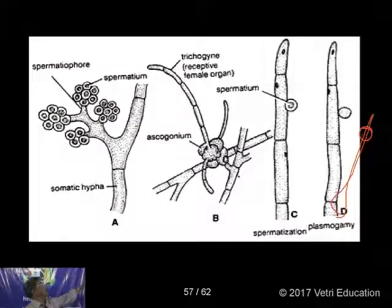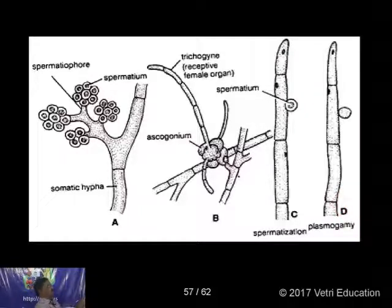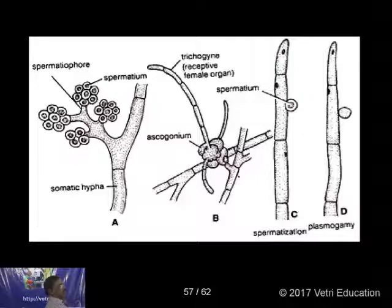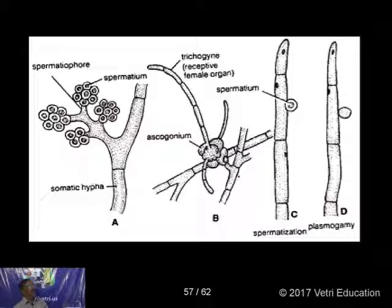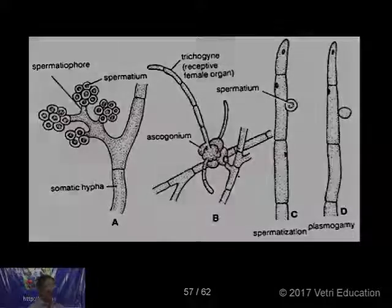In the slide, you can see the somatic hyphae, spermatium, and ascogonium. The spermatia are removed and attached to the trichogyne of the ascogonium; it sends its nucleus inside, and after that the cell has two nuclei — dicaryotization is maintained. So these are the ways of sexual reproduction in Fungi. Tomorrow we will take the classification and also the economic importance of Fungi. Thank you.